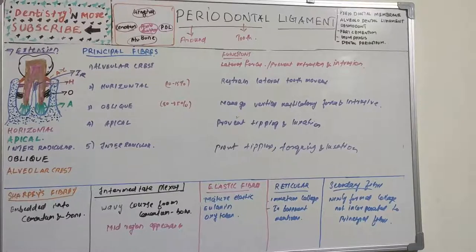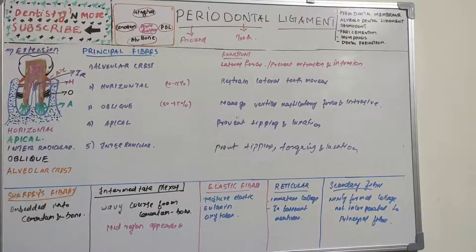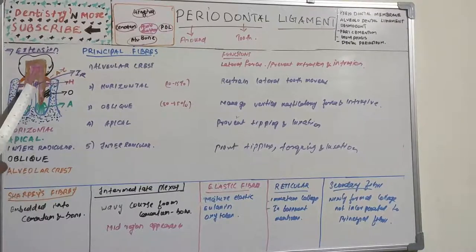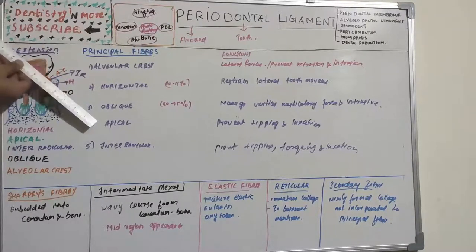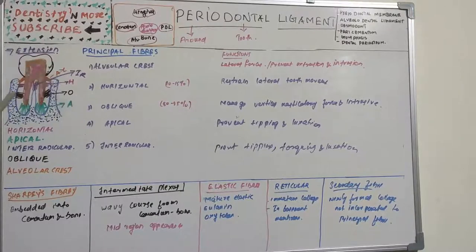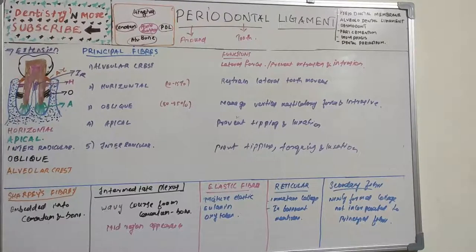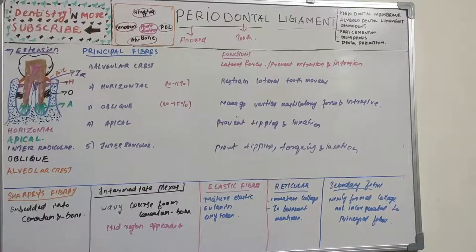The oblique group is the largest group of periodontal ligament fibers, comprising around 80 to 85 percent of the root surface. It extends from cementum in a coronal direction obliquely to the bone, running from cementum to alveolar bone at an oblique angle.